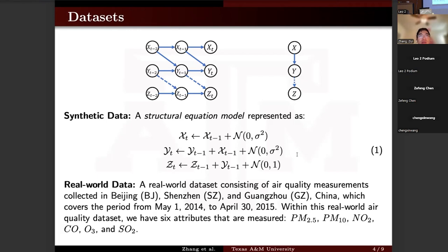We also use the real-world air quality data, which consists of measurements collected in Beijing, Shenzhen, and Guangzhou. This dataset covers the time from May 2014 to April 2015, which is in the form of multivariate time series data with six variables.